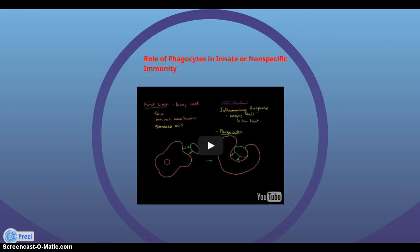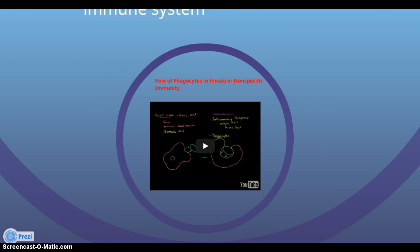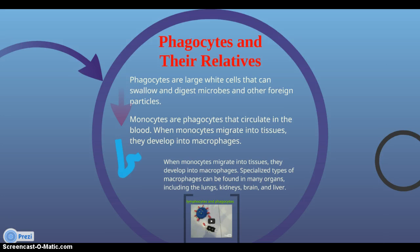Role of a phagocyte in innate, or non-specific, immunity. Phagocytes are large white cells that can swallow and digest microbes and other foreign particles. Monocytes are phagocytes that circulate in the blood. When monocytes migrate into tissues, they develop into macrophages.